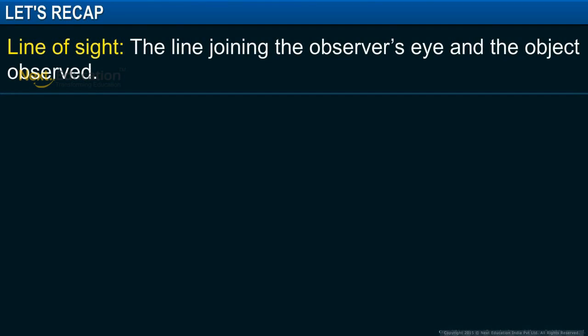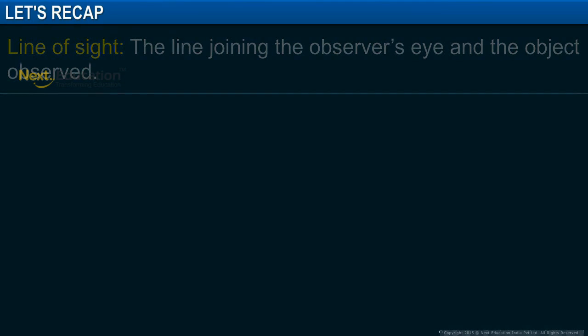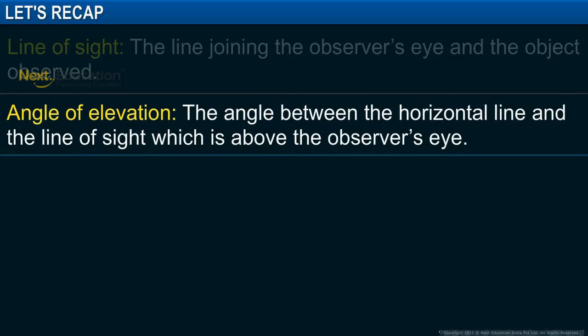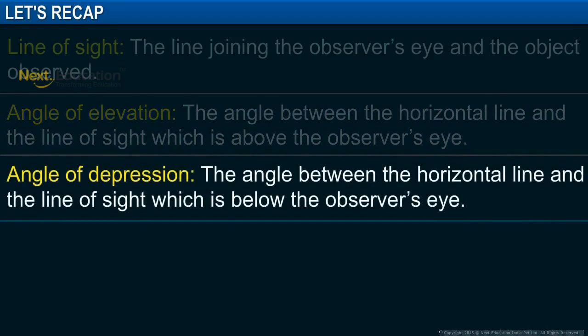In this module, you learnt that the line joining the observer's eye and the object observed is called the line of sight. The angle between the horizontal line and the line of sight which is above the observer's eye is called the angle of elevation. The angle between the horizontal line and the line of sight which is below the observer's eye is called the angle of depression.